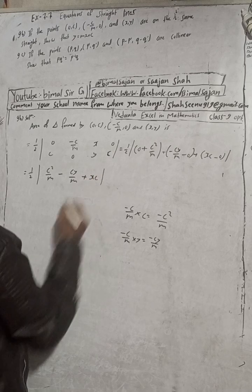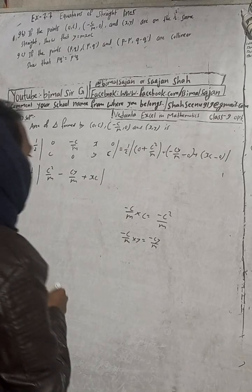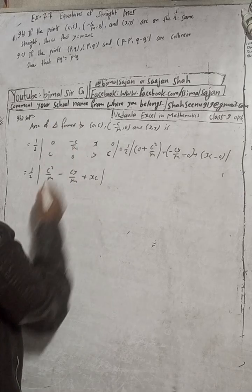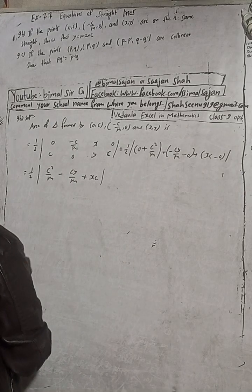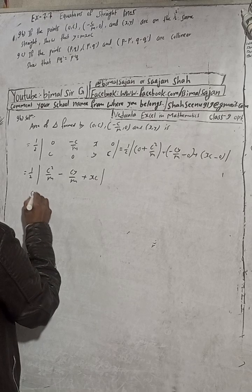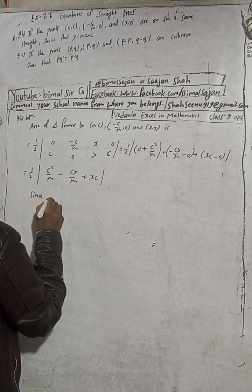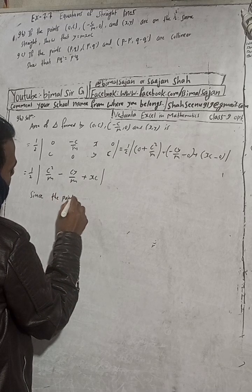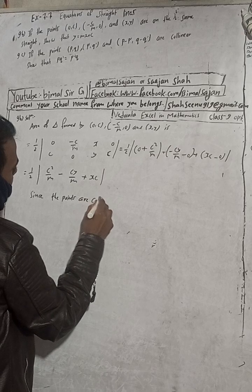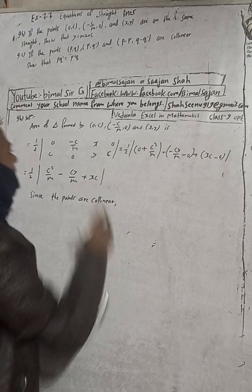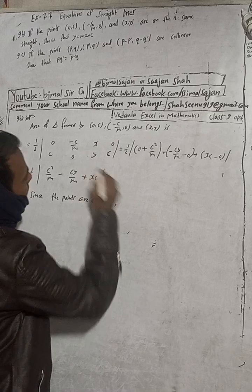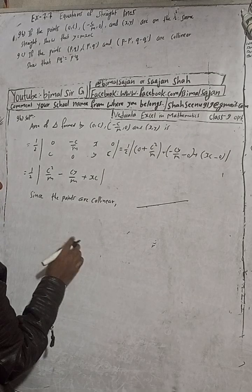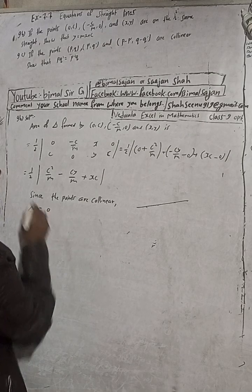One-half times [C²/m plus Cy/m plus mxC]. Now, since the points are on the same line, since the points are collinear.